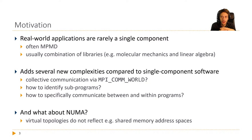Another motivation is NUMA topologies. We have comparatively expensive communication between nodes because we go over the network, and really fast communication inside a node because it's essentially just memory writing. The problem is everything we discussed, including virtual topologies, doesn't really address the fact that some ranks have access to a shared memory address space and some don't. For ranks that do, there might be something faster we can do than just send and receive messages.